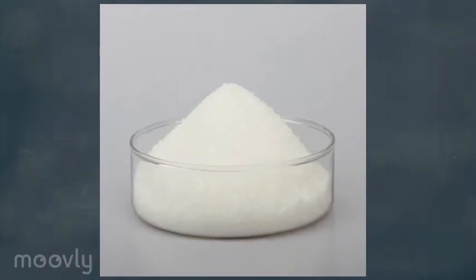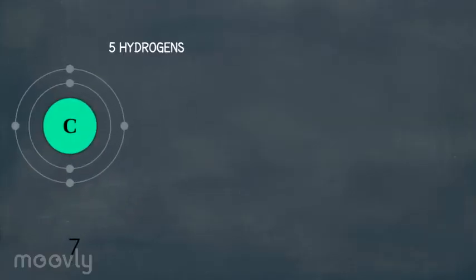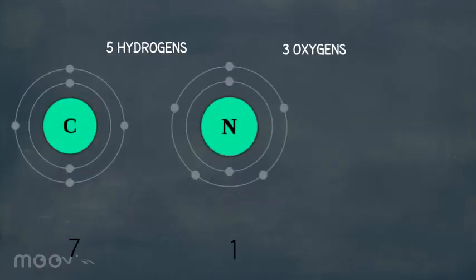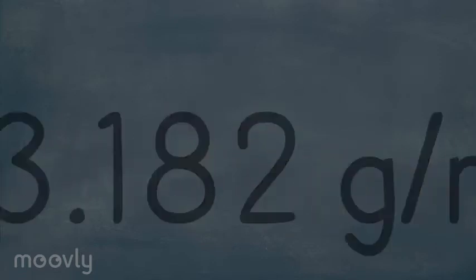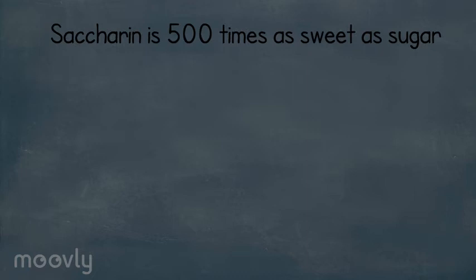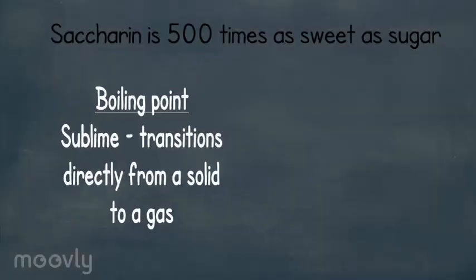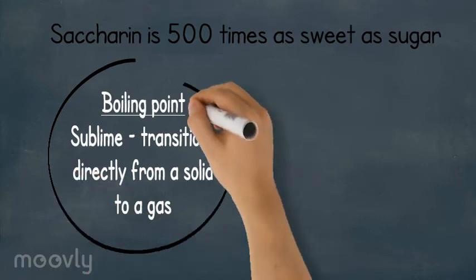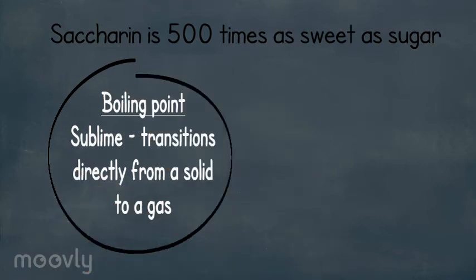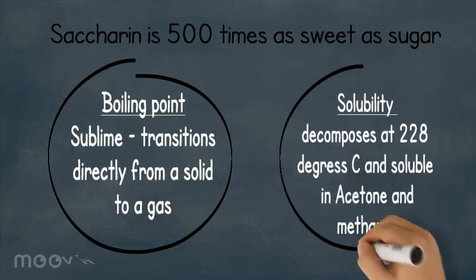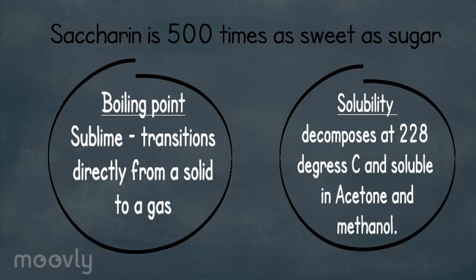Saccharin is a white powder with a molecular formula of C7H5NO3S and a molecular weight of 183.182 grams per mole. In dilute aqueous solution, saccharin is 500 times as sweet as sugar. It does not have a boiling point — saccharin is sublime, meaning it transitions directly from a solid to a gas without an intermediate liquid stage. Saccharin decomposes at 228 degrees Celsius and is soluble in acetone and methanol. It is also slightly soluble in benzene, ethyl ether, and chloroform.